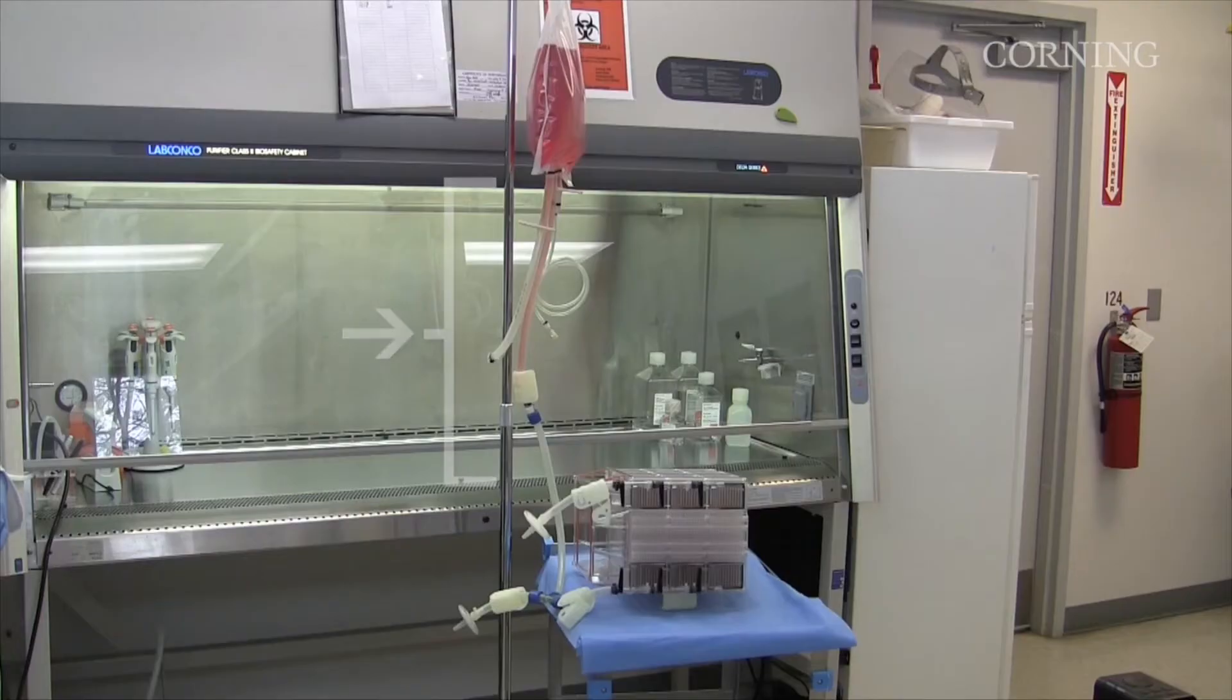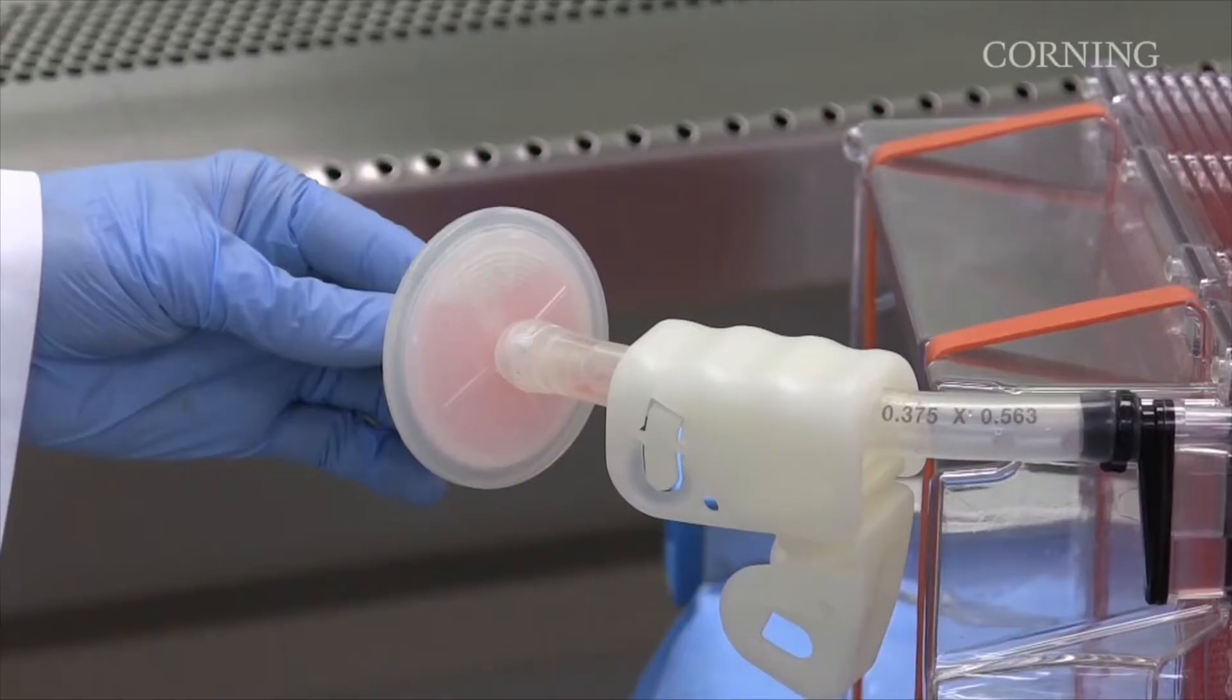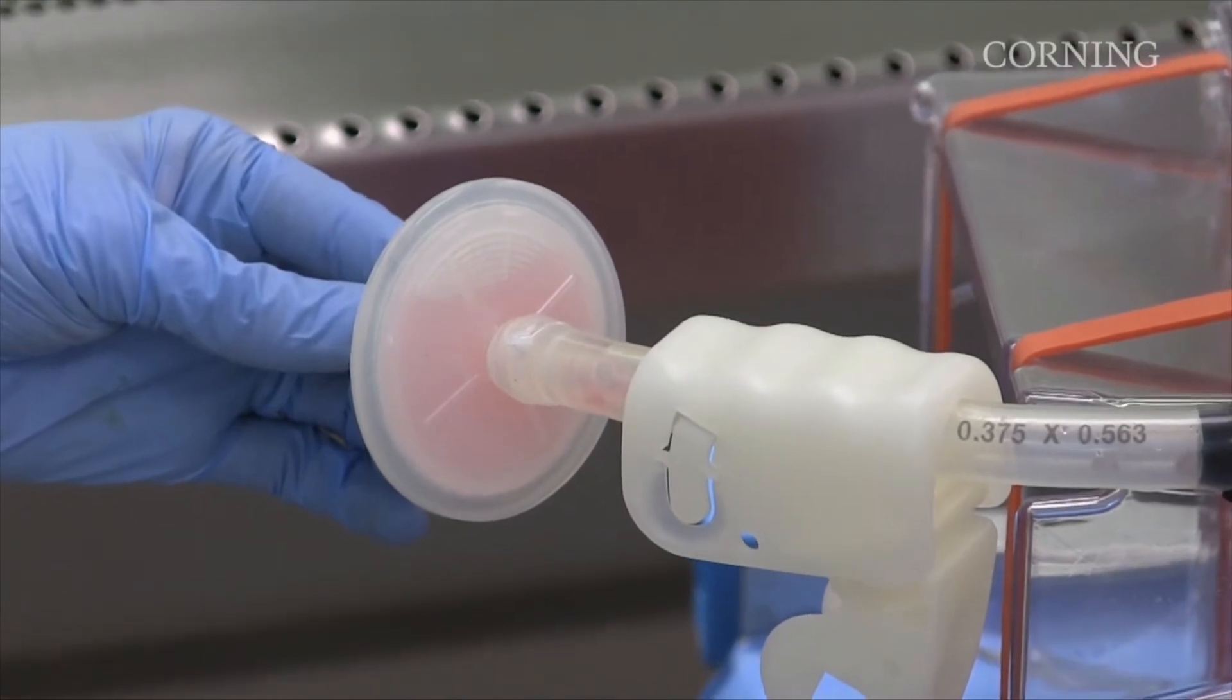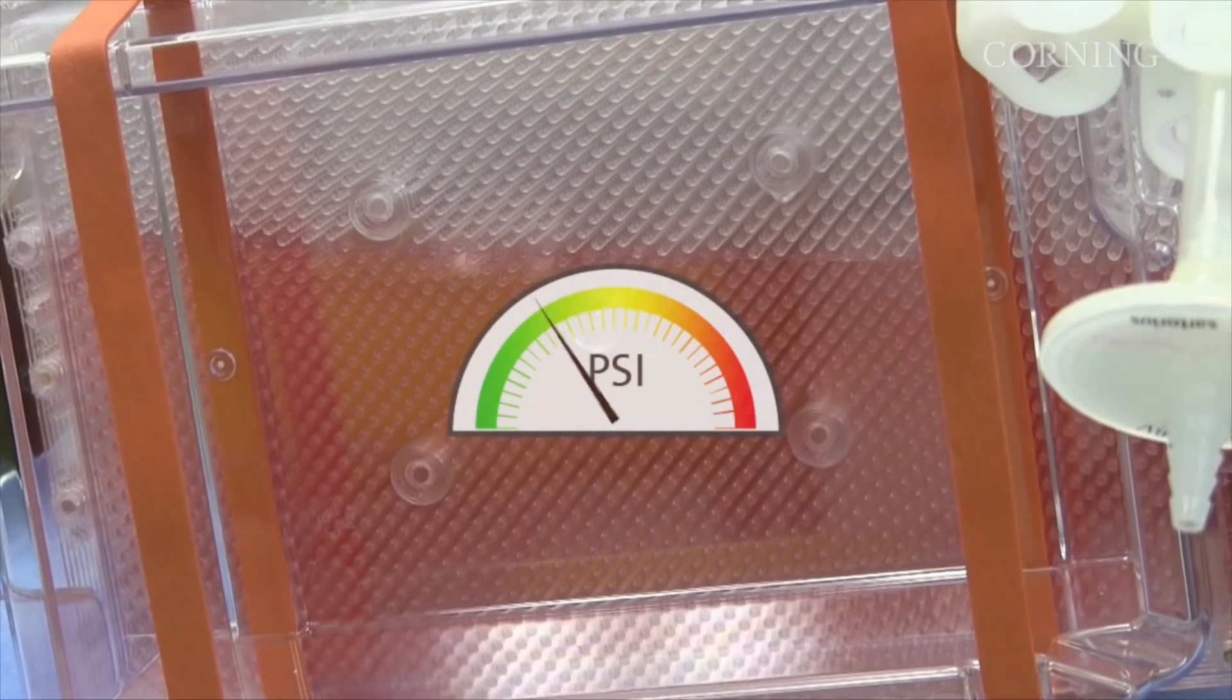To prevent the vent filter from wetting out, be careful not to raise the source vessel too high, which will fill the vessel too quickly. A wet filter prevents air from leaving the HyperStack vessel, which pressurizes the vessel and increases the risk of vessel failure.